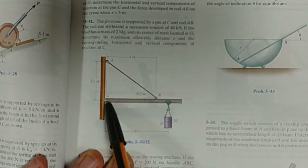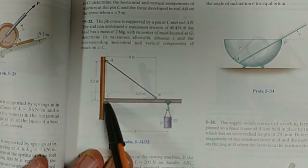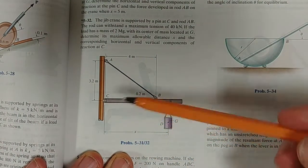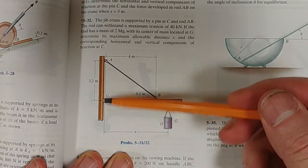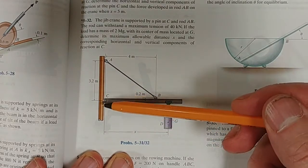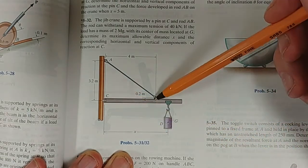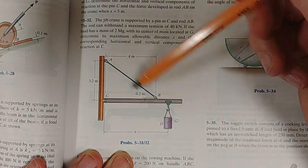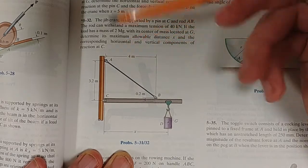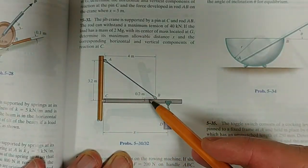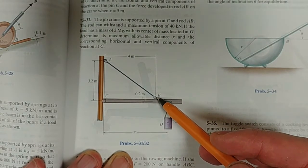And it is supported at C by a pin connection. That's important to know because a pin connection can only support translation in the X and Y. It doesn't support a moment. If this was a fixed support, then it would also support a moment, which means we would most probably not need that, although it's always helpful.